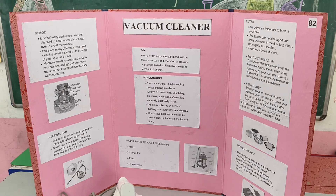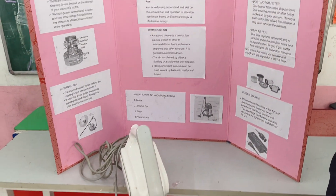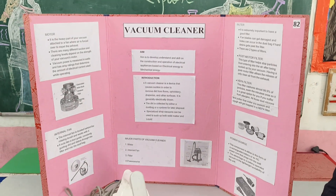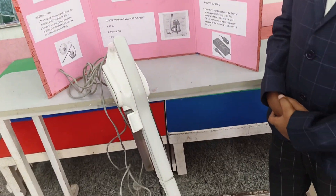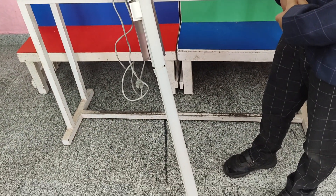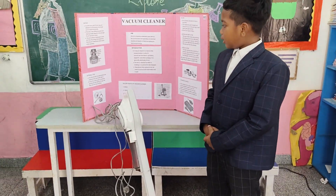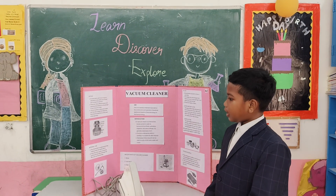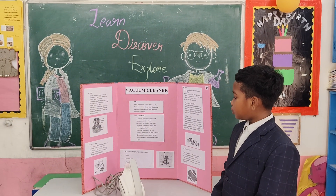A vacuum cleaner is a device that causes suction in order to remove dirt from floors, upholstery, crevices, and other surfaces. It is generally electrically powered. The dirt is collected by either a dust bag or a cyclone for later disposal.